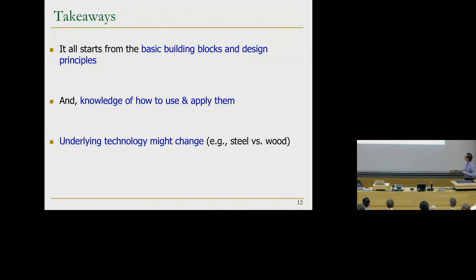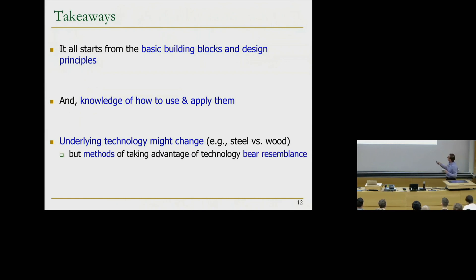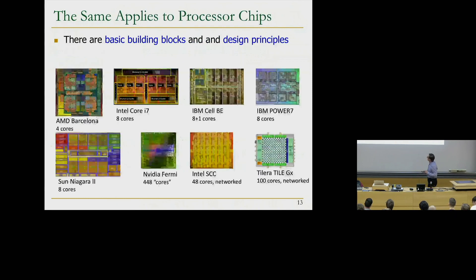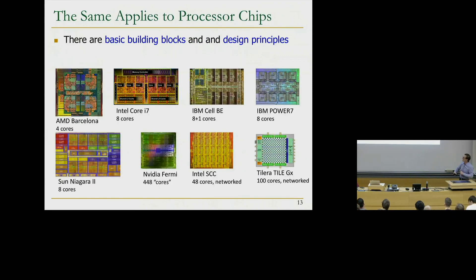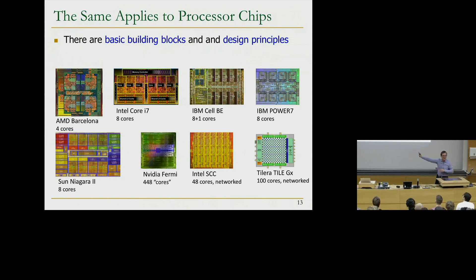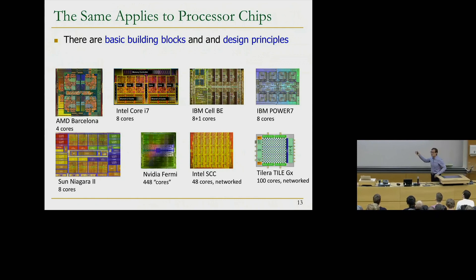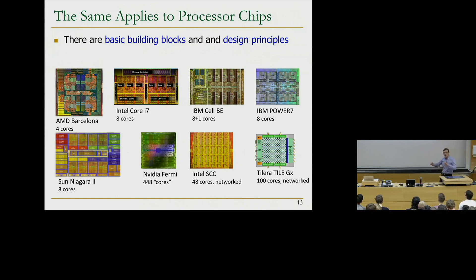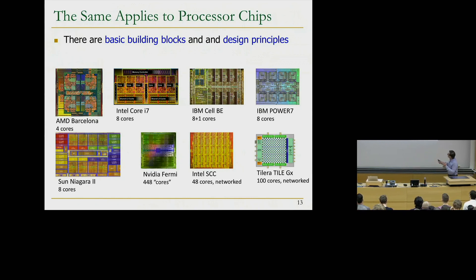In the case of building architecture, you may be constructing something with steel versus wood, but methods of taking advantage of technology bear resemblance. Some principles remain. And methods used for design depend on the principles that are employed. So let me give you a very high-level example. Basically, all of these are multi-core engines at some point. This is a relatively old slide, so it doesn't have the latest multi-core engine you may have in your pocket. But these are all based on the same building blocks in the end: transistors, logic gates, memories, caches, interconnects. But you apply the principles in different ways to cover different trade-offs and design different systems.